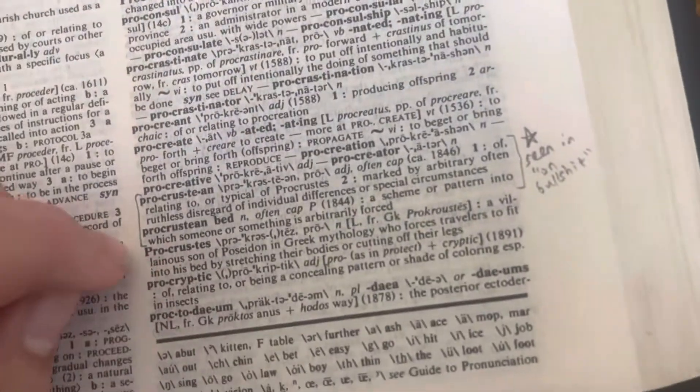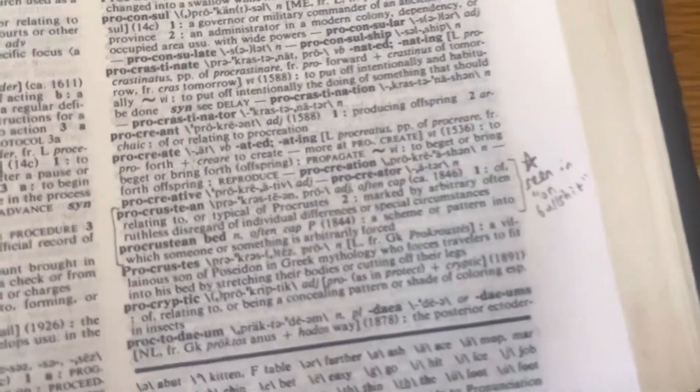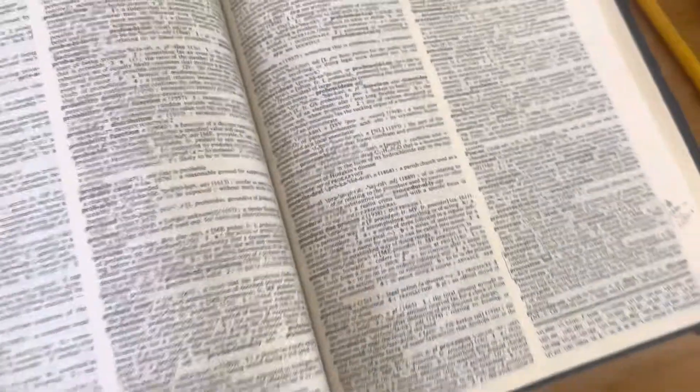Okay, so now I understand Procrustean bed, a scheme or pattern into which someone or something is arbitrarily forced. So I tried to use those terms in a poem today, y'all. And have a good day of reading.